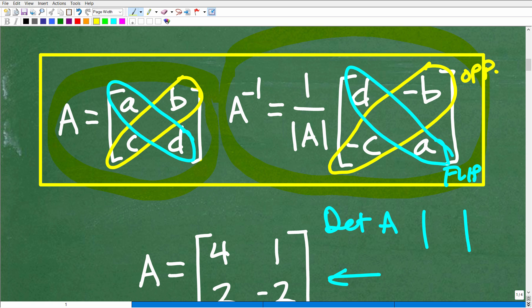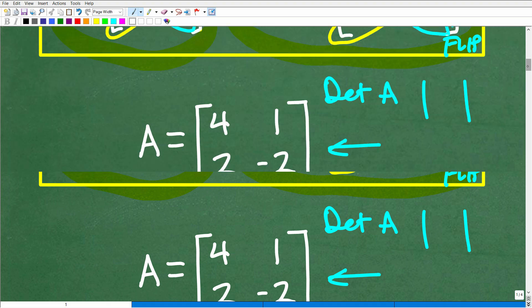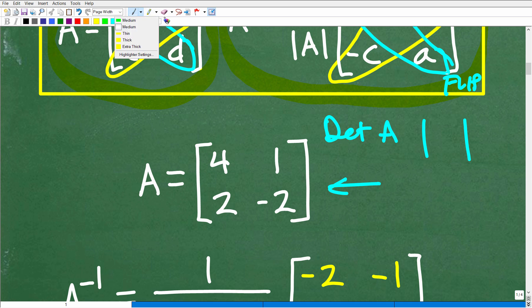Now, this isn't something that I would suggest that you remember all the time because you can always look up this formula. But anyways, that's what we're going to be doing. We're going to flip across the diagonals this way, and we're going to take the opposites this way of our original matrix.